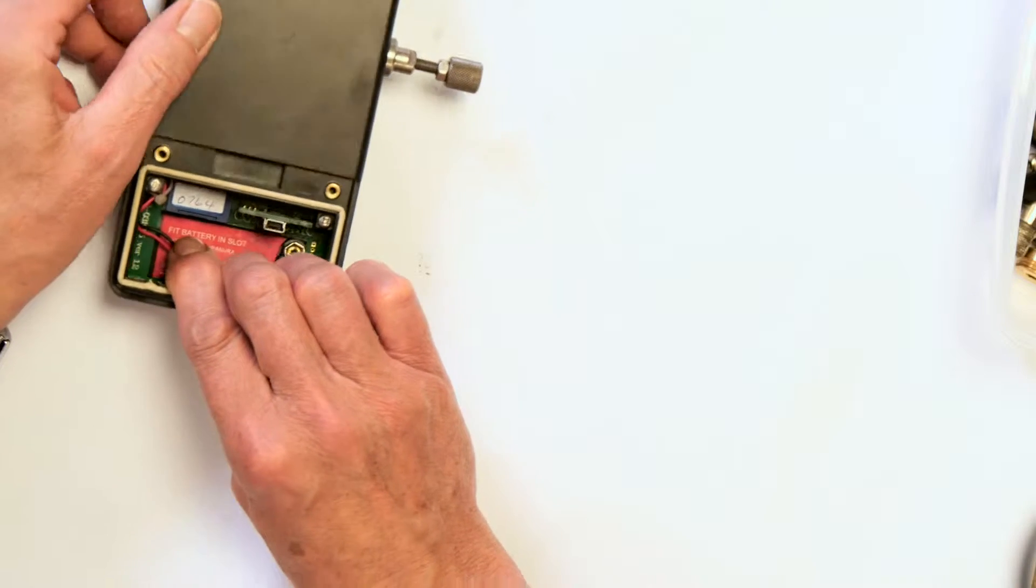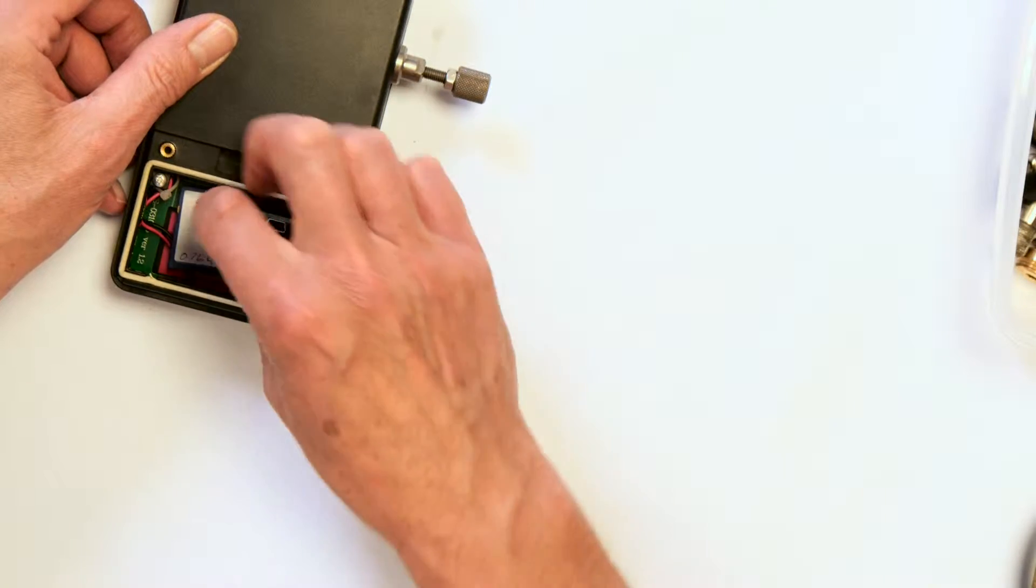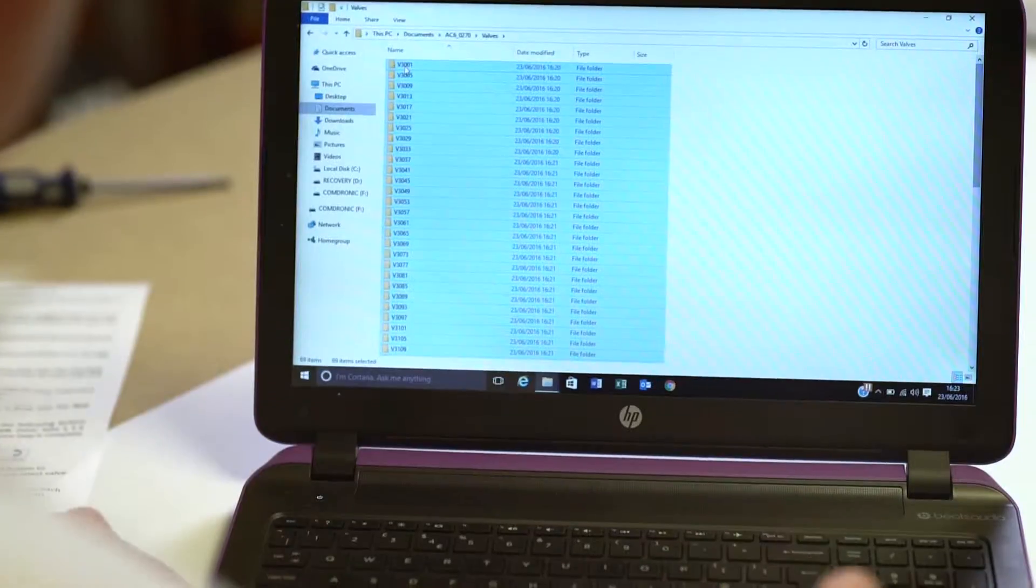But before we put this through the recalibration process, we need to update the valve database, the firmware, and ensure that we have the most up-to-date valves on the unit before it's returned to the customer. We'll do that by removal of the SD card from the back of the unit. And then we should take that away and update that with the new valve database.